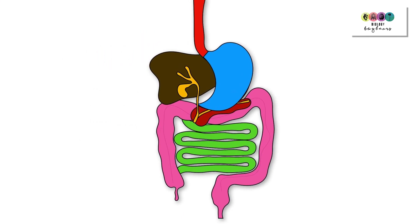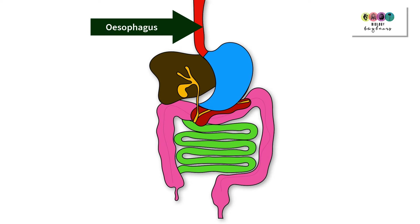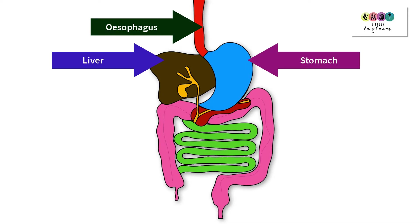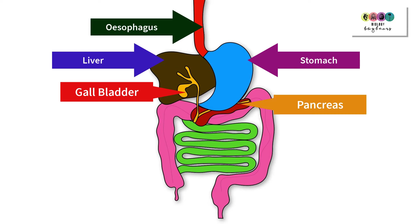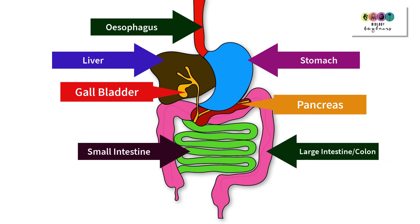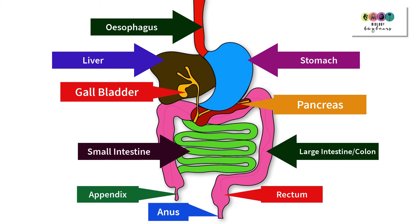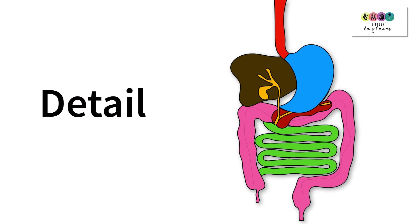When you are looking over the exam questions and you see diagrams, the first things you're often asked to label are the esophagus, then the stomach, the liver, the gallbladder, the pancreas, the small intestine, the large intestine (the colon), not forgetting the appendix, the rectum, and the anus. It's important when looking at diagrams to notice particular detail.